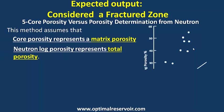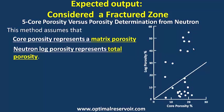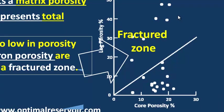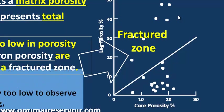The fifth technique is core porosity versus porosity determination from neutron log. This method assumes that core porosity represents matrix porosity and neutron log porosity represents total porosity. Core samples that plot too low in porosity for a corresponding neutron porosity are considered to come from a fractured zone. As shown in the diagram, fracture porosity is generally too low to observe numerically on a neutron log.